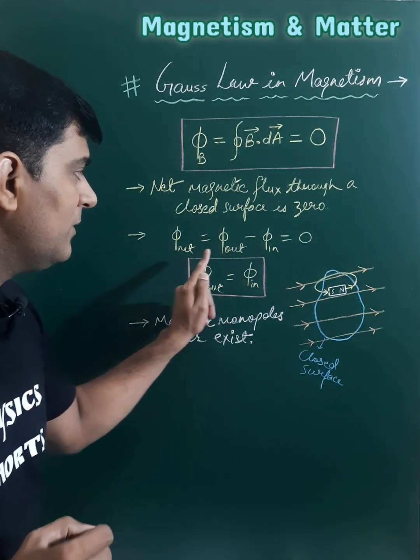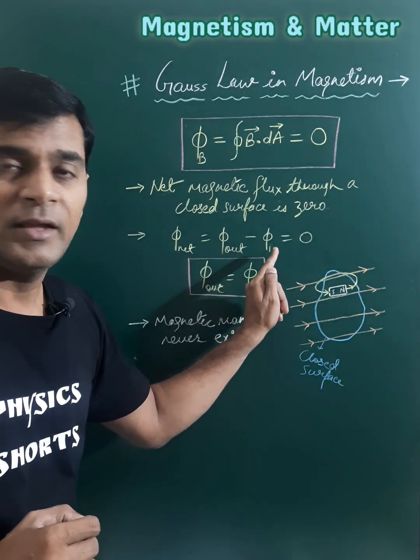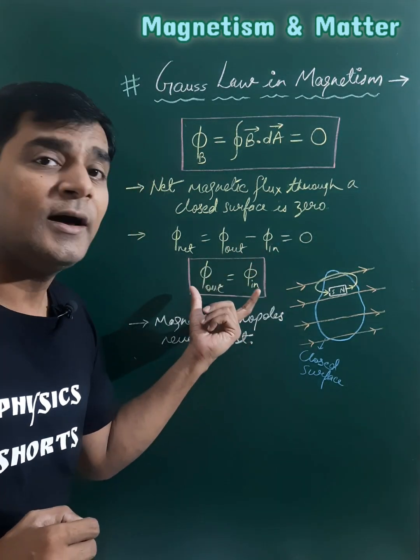Since the net magnetic flux is given by phi out minus phi in, and phi out and phi in are both equal.